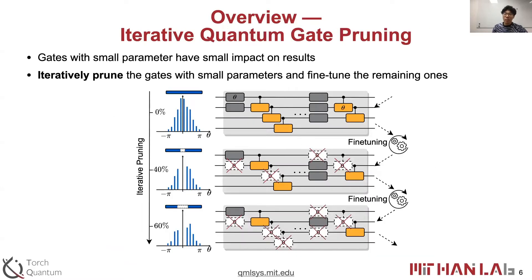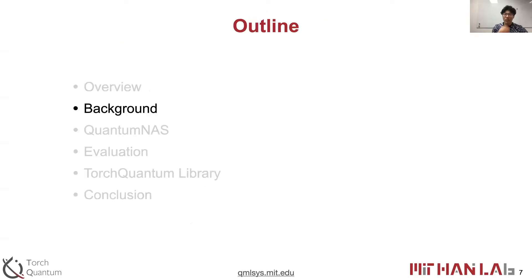We also propose iterative quantum gate pruning. Since gates with small parameters have small impact on the results, we can iteratively prune the small gates and then fine-tune the remaining ones to recover accuracy. That's the quick overview of the techniques we proposed.